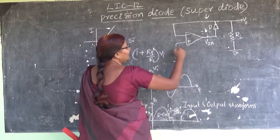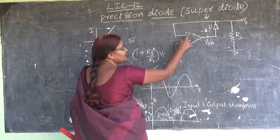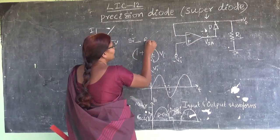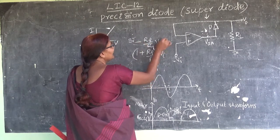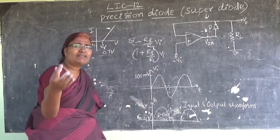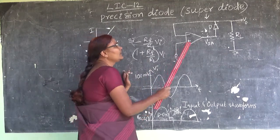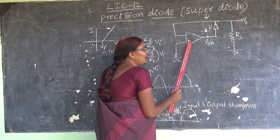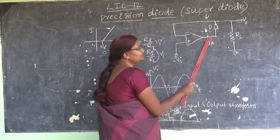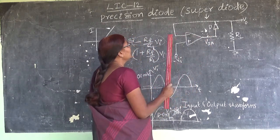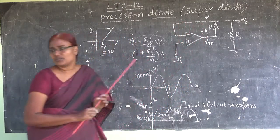If my input is connected to the inverting input terminal, then I will get the inverting gain, that is minus RF by R1 into Vi — so a negative gain. Whatever may be the value of the output, if non-inverting op-amp mode is operated then I will get a positive output; if inverting op-amp mode is operated, then I will get negative output.